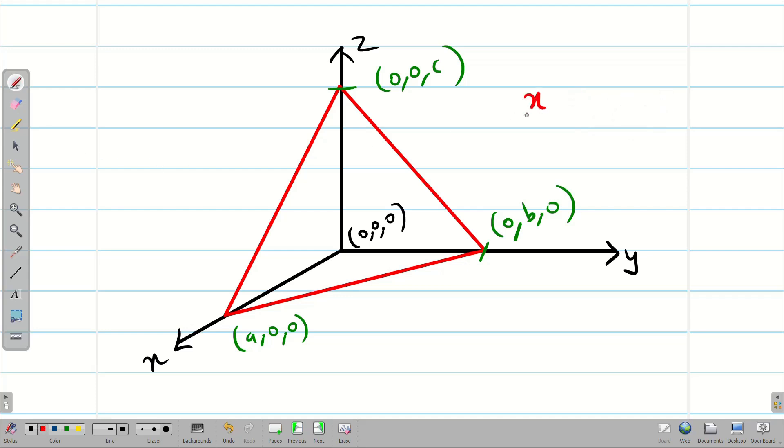Now, I can write the equation of the tetrahedron as x by a plus y by b plus z by c equal to 1. Now, we have to find the volume of the tetrahedron. The good thing is we don't want to convert into octants or anything because the tetrahedron has one corner at the origin (0,0,0). So, my lower limits are going to be z equal to 0, y equal to 0, x equal to 0. Now, this is going to be easy for me to solve the problem. So, let us go into the solution for this problem.